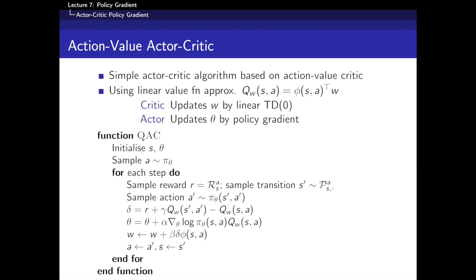Whether we have a policy that we represent, or whether we have both — that's what this Venn diagram represents. If we have a value function and represent that value function, we call it value-based. If we have a policy that we represent, we call it policy-based. And if we have both of these things in our algorithm, we call it an actor-critic.